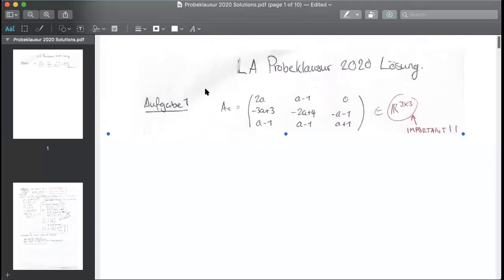So this exercise, they're giving us a matrix, this matrix over here, and they're saying it's a matrix over the real numbers. And it's extremely important, pay attention to whether it's a real number, complex number, or whatever here, because you're going to need it later on.